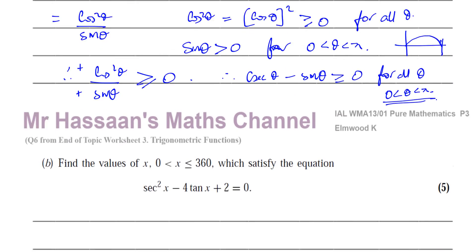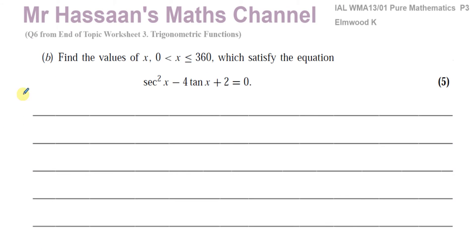That's for part A. Now, for part B, find the values of x when x is between 0 and 360 degrees, which satisfy the equation 6sec²x minus 4tan x plus 2 equals 0. So here we have to express these as the same trig function. Now, sin²θ plus cos²θ equals 1 is our main identity.